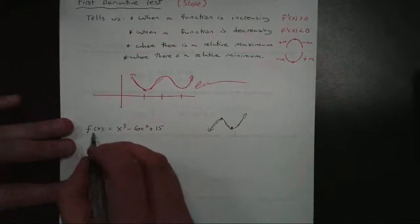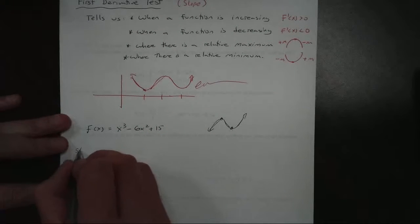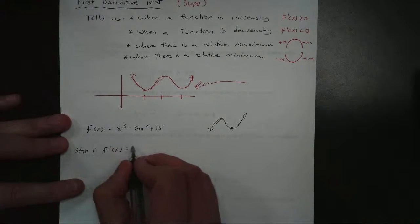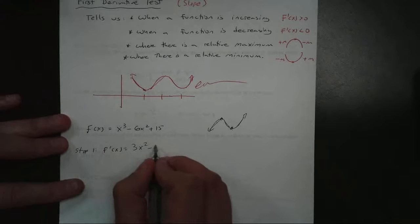To do that, we have to use the derivative. So step one, you have to find the derivative of the function. And remember, that's our power rule, 3x squared minus 12x.